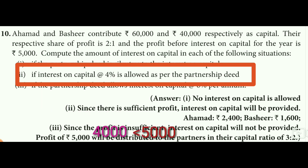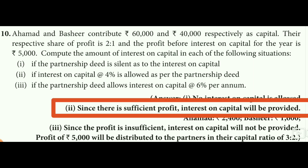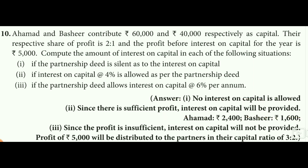The profit before interest on capital is 5,000. We compare 5,000 with the total interest on capital of 4,000. Since 4,000 is less than 5,000, the profit is sufficient to pay the interest on capital. Therefore, the full interest on capital of 4,000 will be provided.